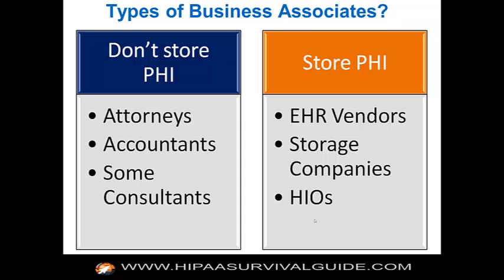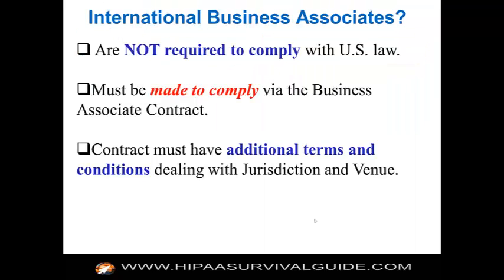There are different kinds of business associates, and it's important to understand the difference. You may have a whole set of business associates that do have access to PHI — because otherwise they wouldn't be business associates — but attorneys, accountants, and some consultants have access to PHI to perform their business function but don't store or maintain PHI on behalf of the covered entity. Others clearly do store and maintain PHI: EHR vendors, storage companies, health information organizations, etc. The question is how to treat these different kinds of business associates consistently based on what they do.